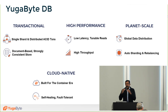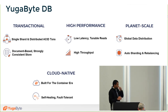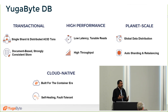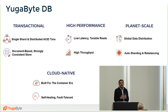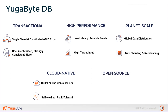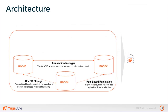YugabyteDB is built for the container era — it runs on bare metal, VMs, or containers and can be managed by Kubernetes with auto-scaling and rebalancing. It's open in two ways: it's an Apache 2.0 open-source database, and the APIs are open as well.